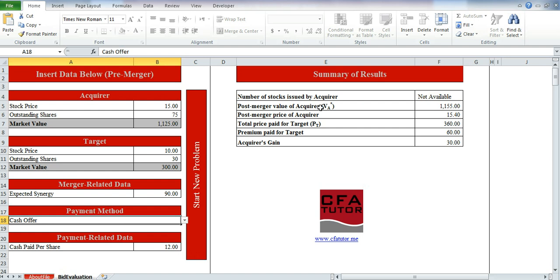The number of stocks issued by acquirer is not available, which makes sense because it's an entirely cash offer. We have the post-merger value of acquirer, the post-merger price of the acquirer, the total price paid for the target, and the premium paid for the target, which is the difference between the total price and the pre-value. And this is the acquirer's gain, which is the difference between the synergies and the premium that was paid.